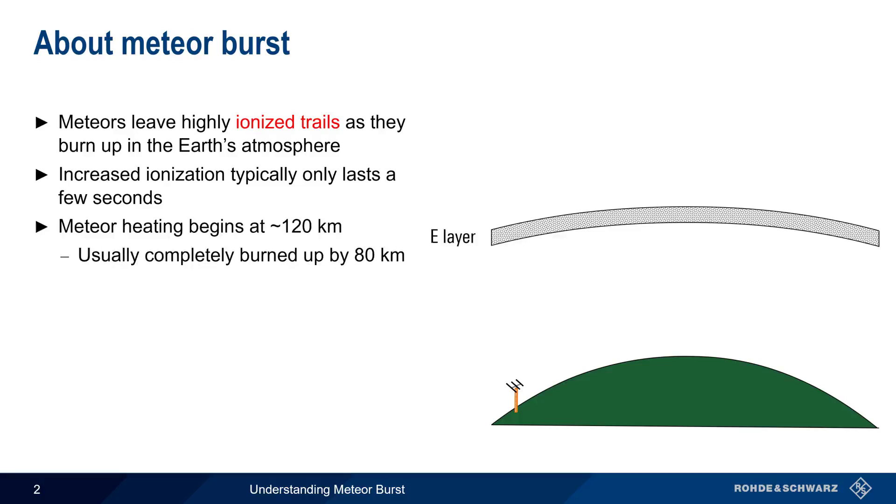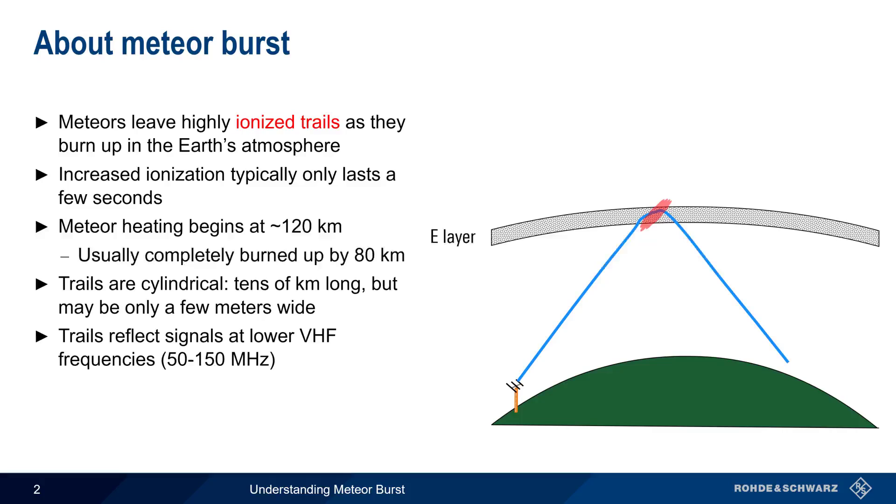The resulting ionization trails are cylindrical, usually tens of kilometers long, but may be only a few meters wide. These trails can be used to reflect VHF signals, bending them back towards Earth, and thus meteor bursts can enable long-distance skywave communications at lower VHF frequencies.